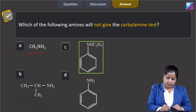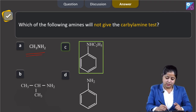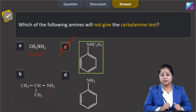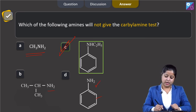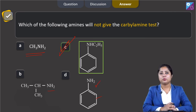Option A (CH3NH2) is 1°, option B (benzene-NHC2H5) is 2° - this compound will not give the carbylamine test. Option C (CH3CH(CH3)NH2) is 1° and will give the test, and option D (aniline) is also a primary amine and will give the test. The correct answer is option C.